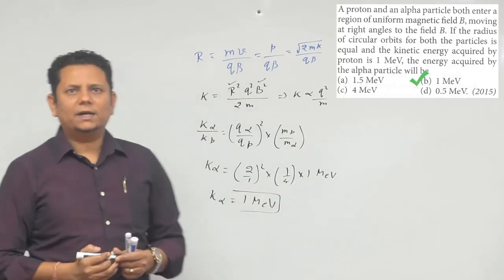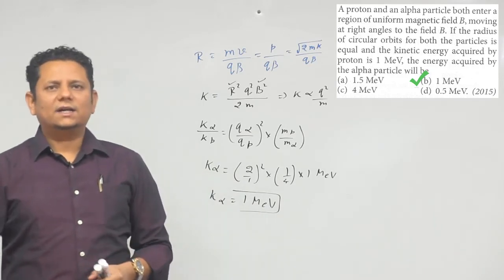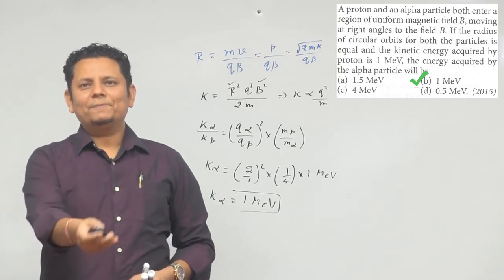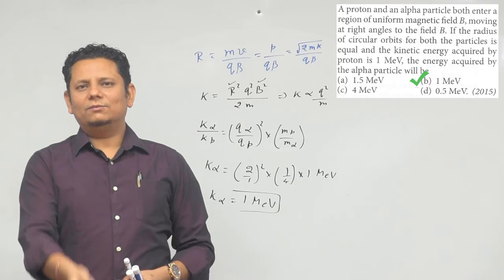Ye aapka alpha particle ki kinetic energy hojayegi. So based on this, hum keh sakte hain ke option number B, 1 MeV, would be the right answer.